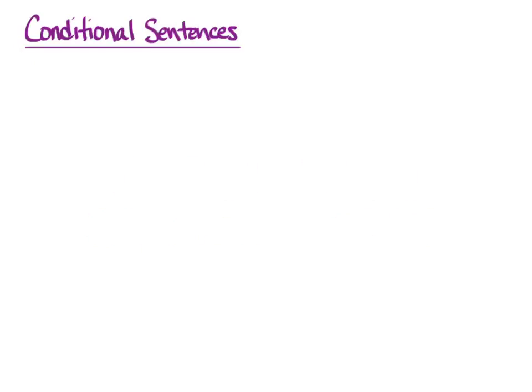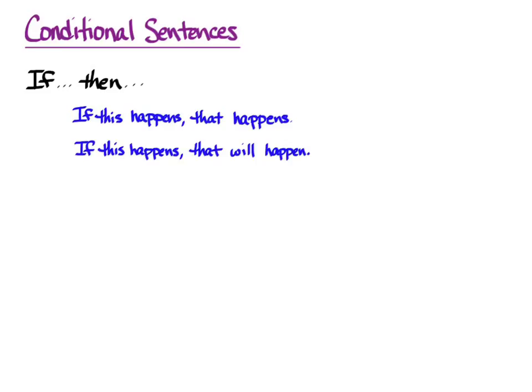Conditional sentences are if-then sentences. An example in English is: if this happens, that happens. The idea is that whenever the condition in the if-clause occurs, the action in the that-clause occurs. But we can change it up: if this happens, that will happen is a little different, and it supposes a possible action in the if-clause and makes a pretty definite claim about what will happen when the if-clause comes true.